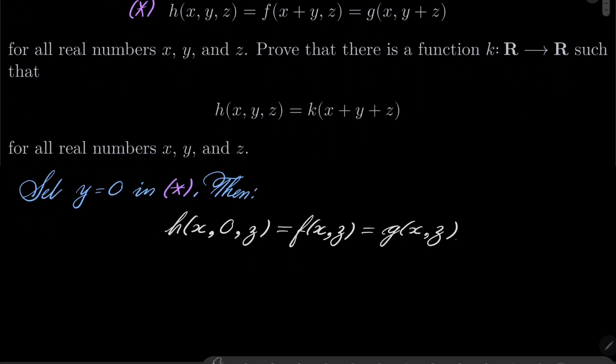So our condition asterisk now becomes the following: h(x,y,z). Instead of f(x+y,z), we can write h(x+y,0,z).